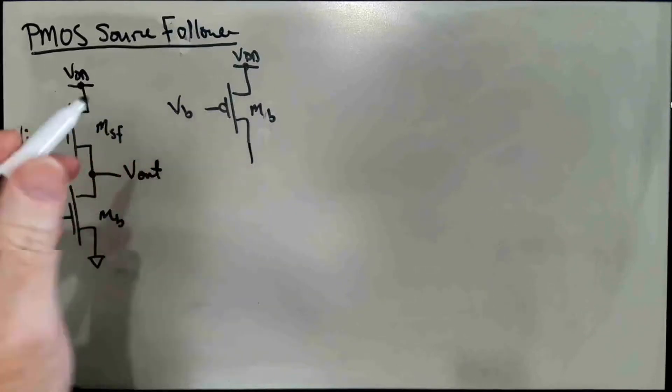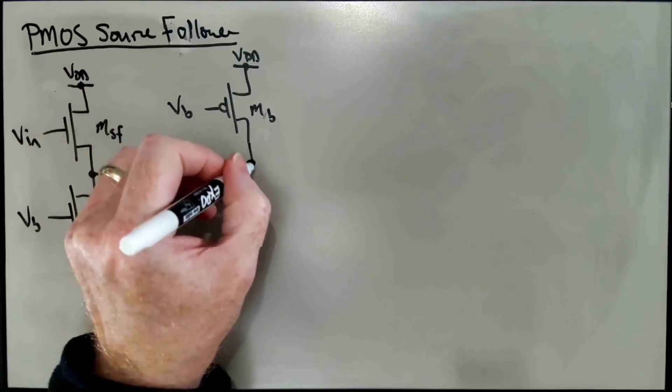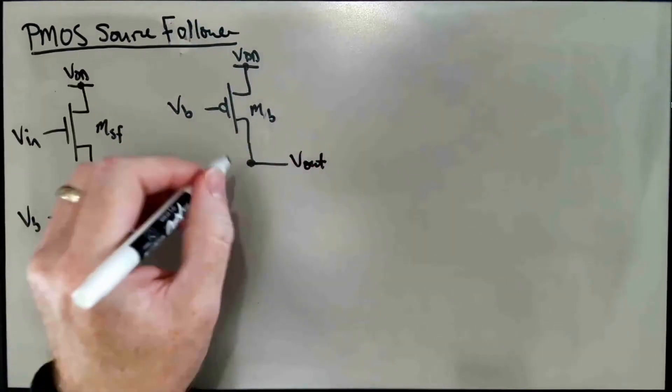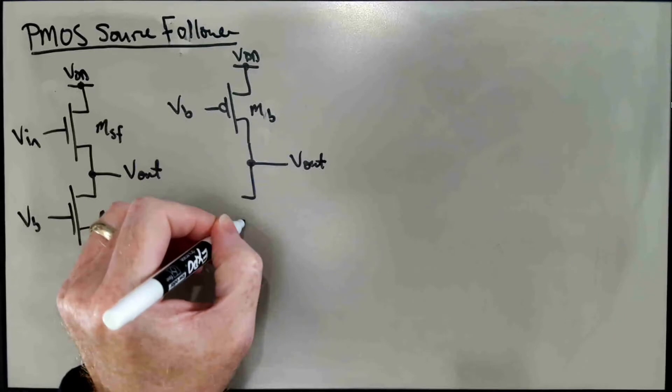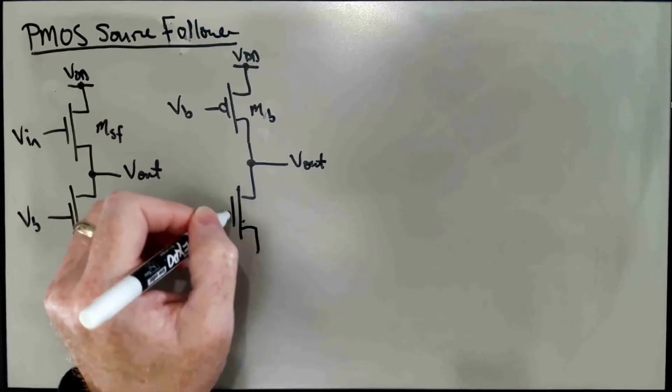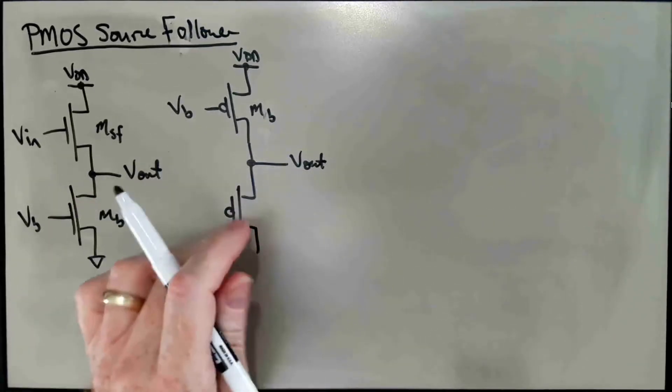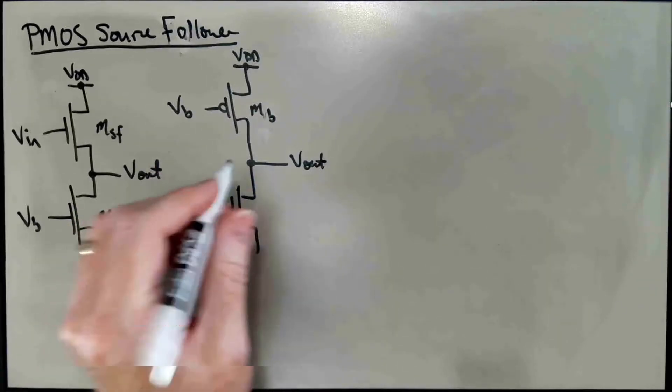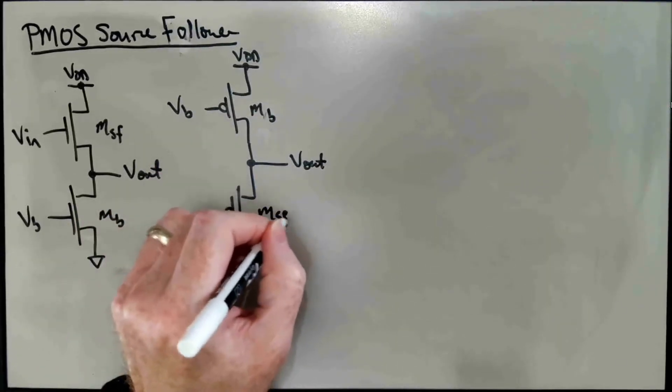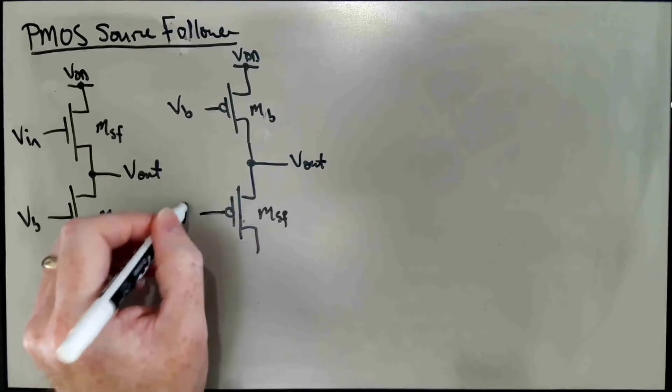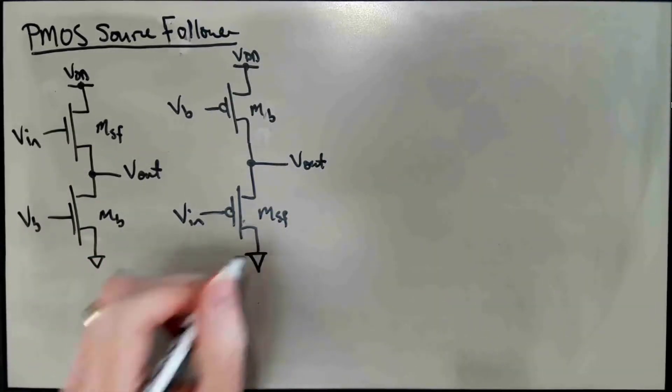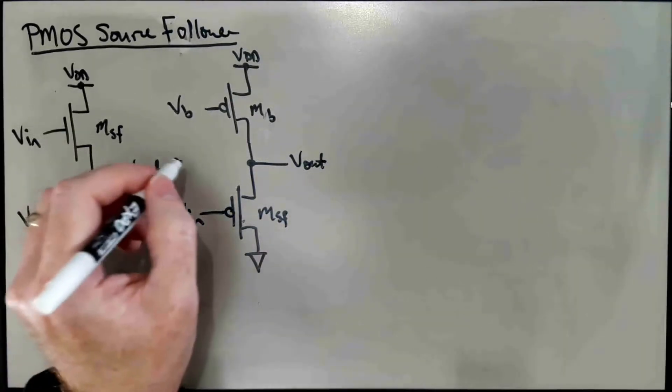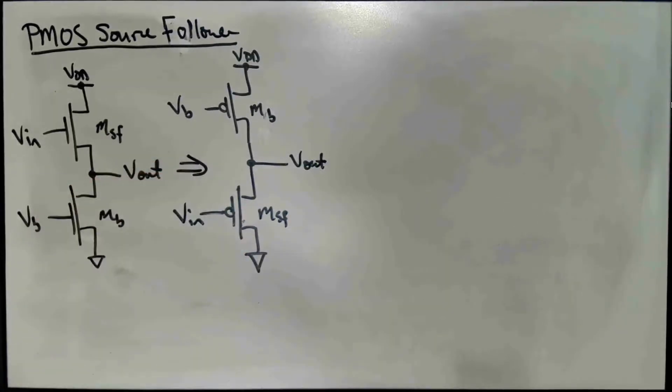So this is VB. The drain of NB was Vout, so it's still Vout. That's also the source of MSF. So MSF is now a PMOS transistor. Source is connected to Vout. The input is on the gate, and the drain of MSF was VDD. Now the drain is ground, and so this is the corresponding PMOS version of the circuit.